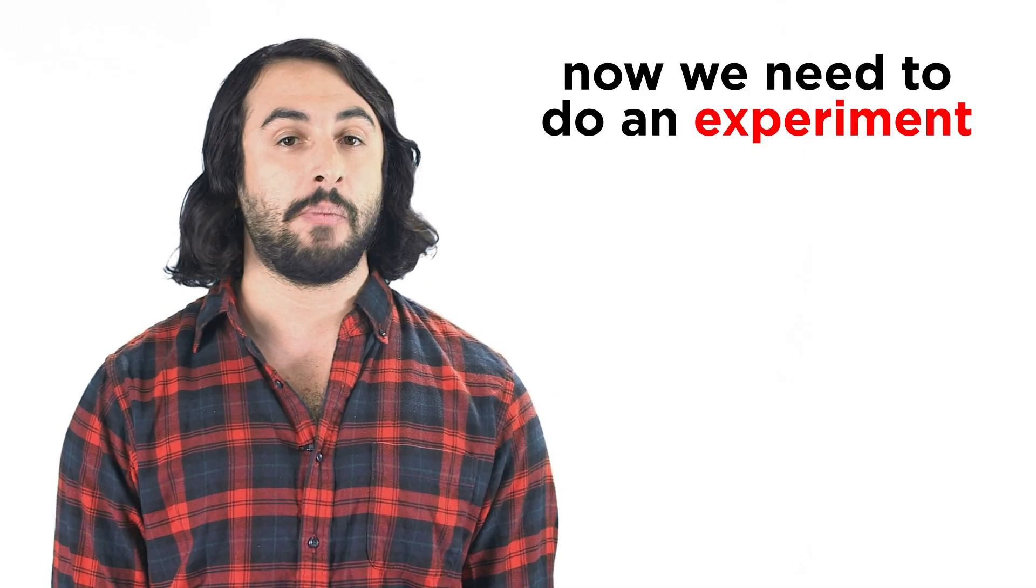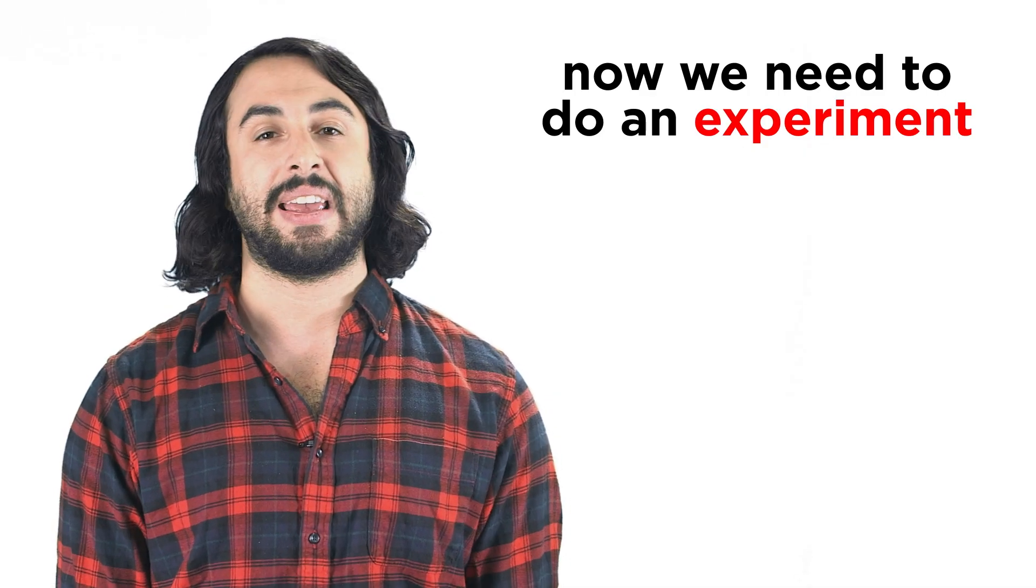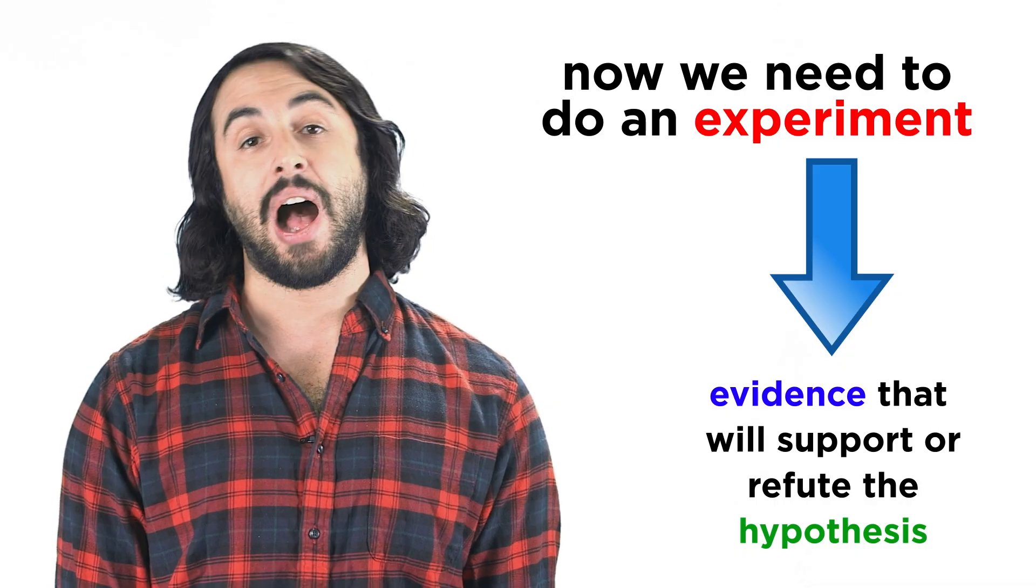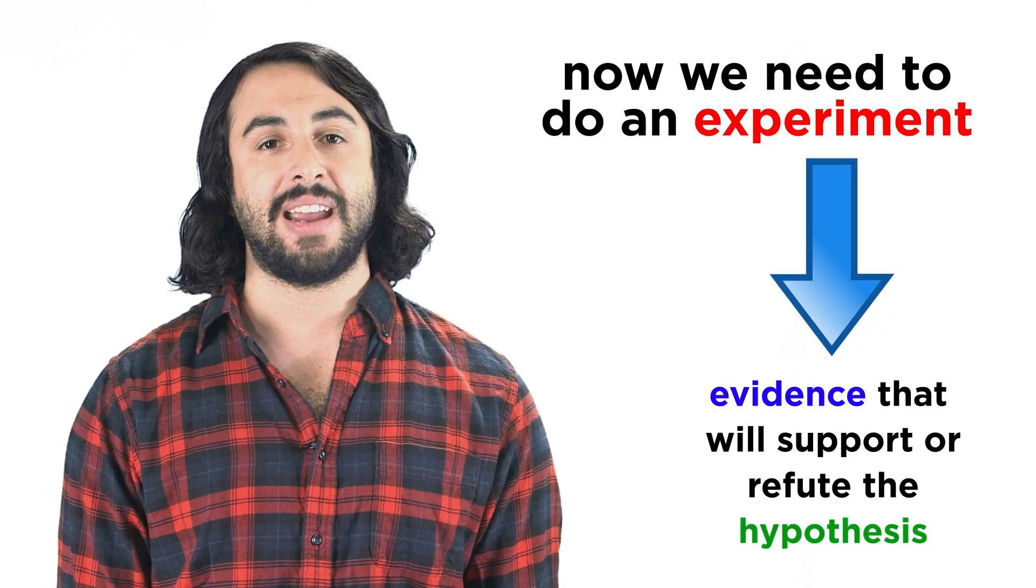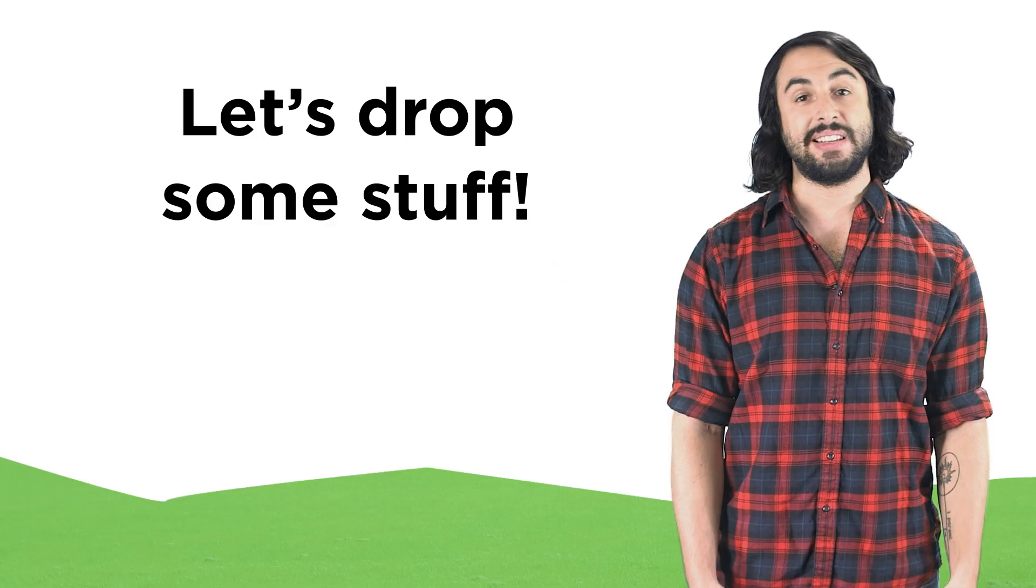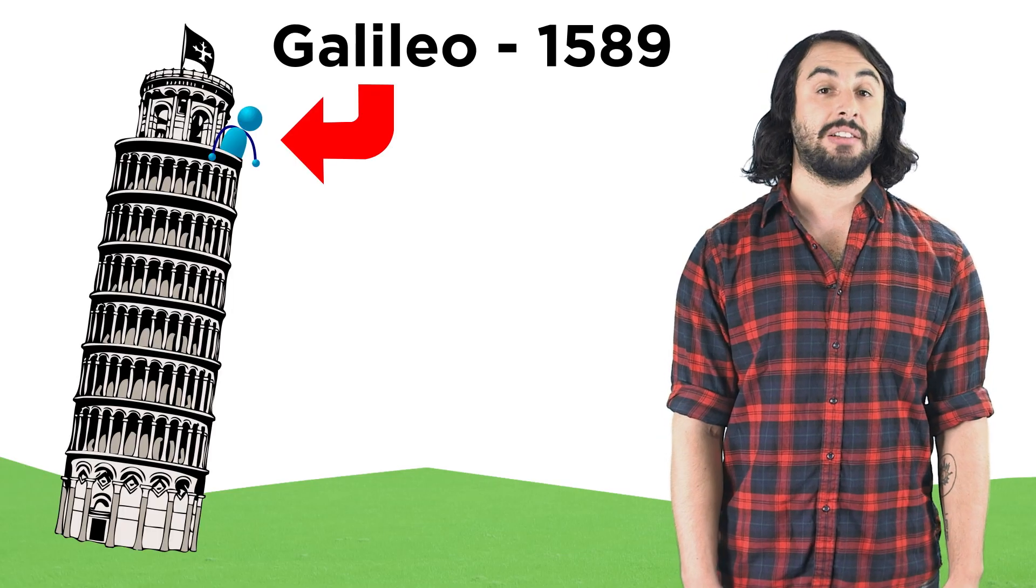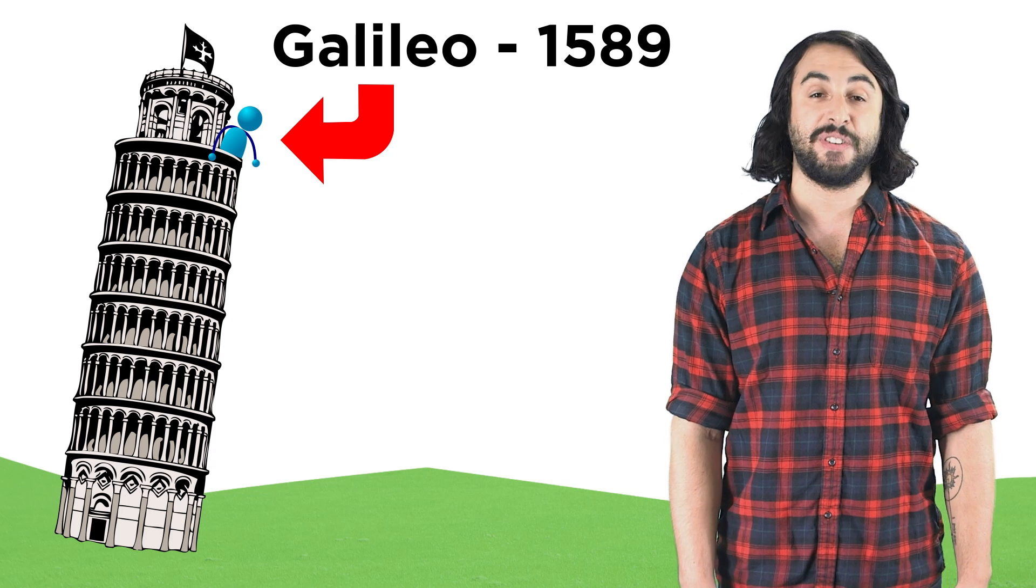We may then get an idea for some way to test our hypothesis. An experiment is a way that we can gather empirical evidence that will either support or refute the hypothesis by comparing data to predictions we have made. In this case, the experiment is pretty obvious. We could drop objects of varying masses from the same point and see how fast they fall, like Galileo is rumored to have done from the top of the Leaning Tower of Pisa in 1589.